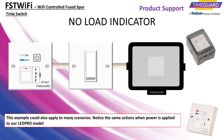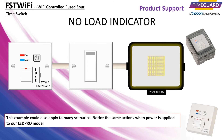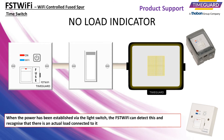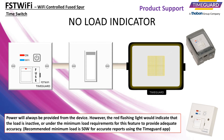This example could also apply to many scenarios. Notice the same actions when power is applied to our LED Pro model. When the power has been established via the light switch, the FST Wi-Fi can detect this and recognize that there is an actual load connected to it. Power will always be provided from the device; however, the red flashing light would indicate that the load is inactive or under the minimum load requirements for this feature to provide adequate accuracy. The recommended minimum load is 50 watts for accurate reports using the TimeGuard application.